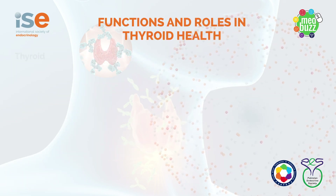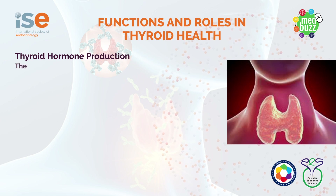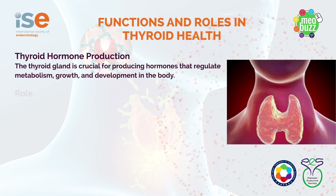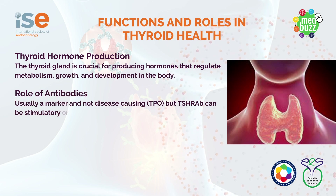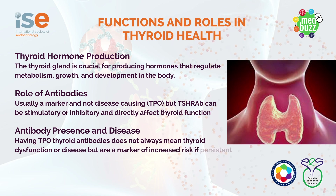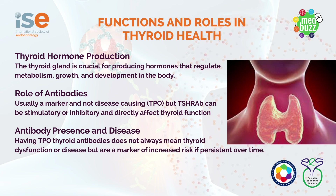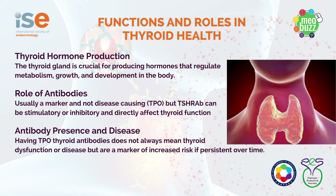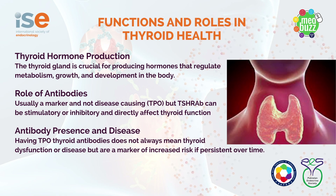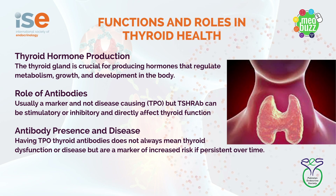As already highlighted, thyroid gland function is essential for regulating metabolism, growth and development. In general, antibodies are a marker and not disease-causing — that's particularly true of thyroperoxidase antibodies and thyroglobulin antibodies. But TSH receptor antibodies can be stimulatory or inhibitory and therefore do affect thyroid function and have a role in the pathogenesis of, for example, Graves disease. The presence of thyroid antibodies does not always mean thyroid dysfunction, but may be a marker of increased risk if persistent over time.